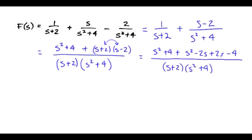A fair bit of cancellation on top. Those terms disappear. We've got a plus 4 and a minus 4. So all together on top, we've got 2s squared.